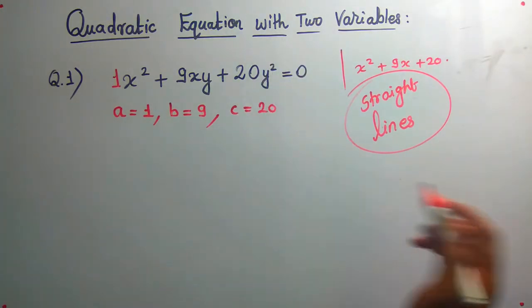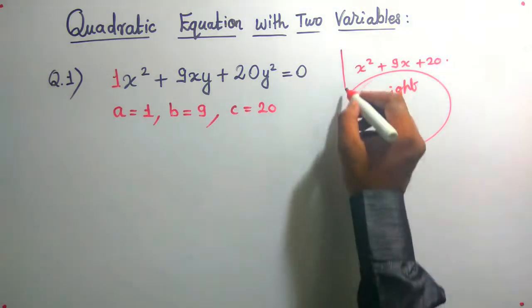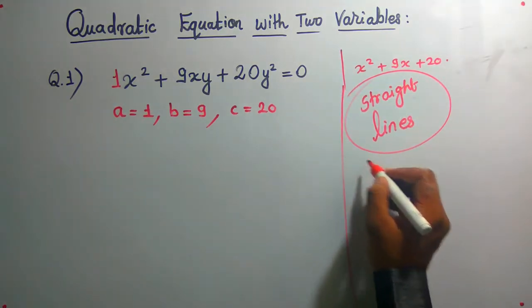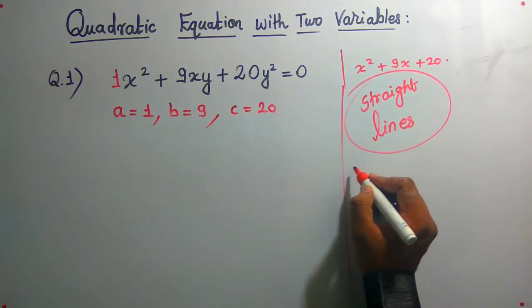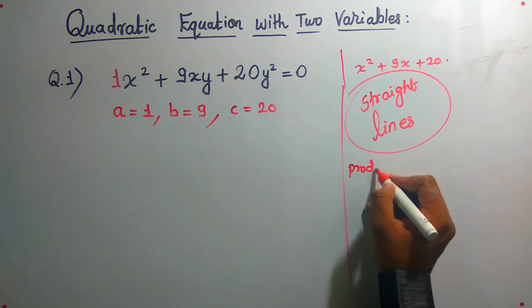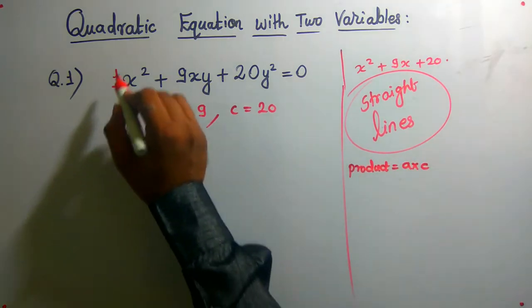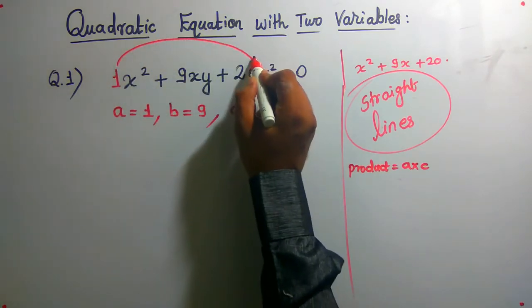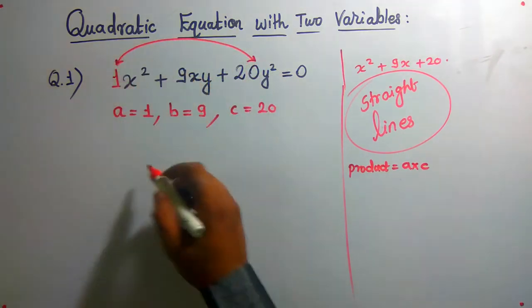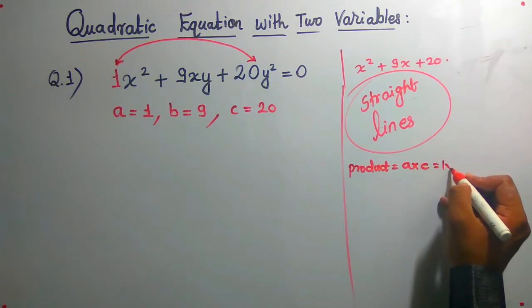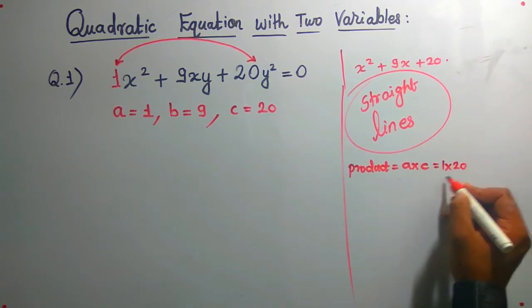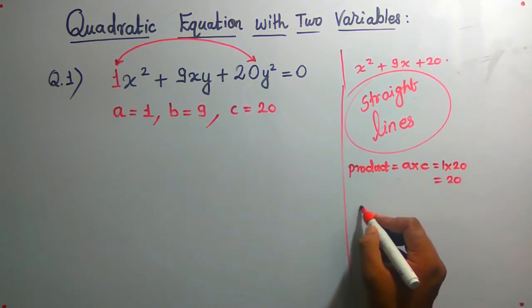Now let's see factorization. In regular factorization, the product is equal to a into c. So when our product is equal to a into c, that means 1 into 20, that is 20.